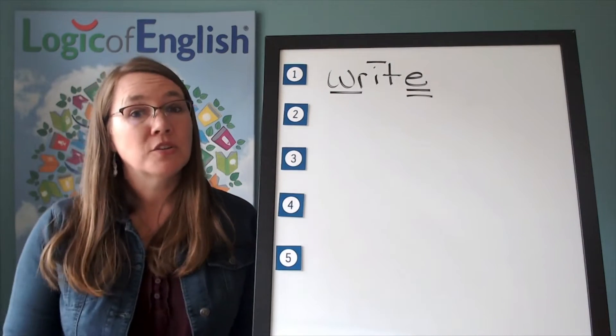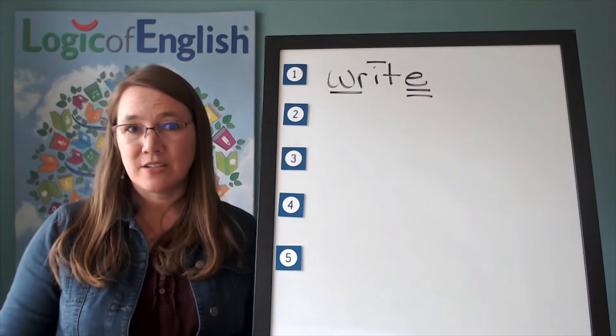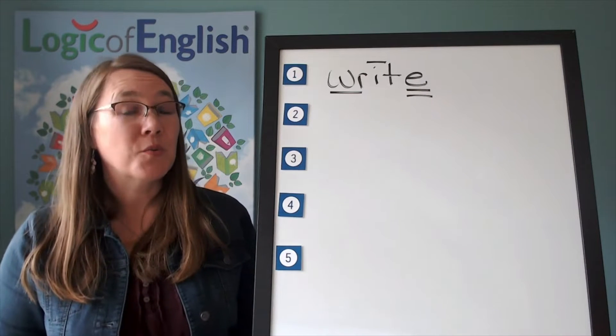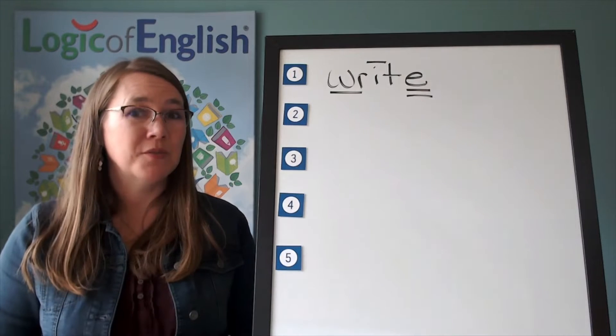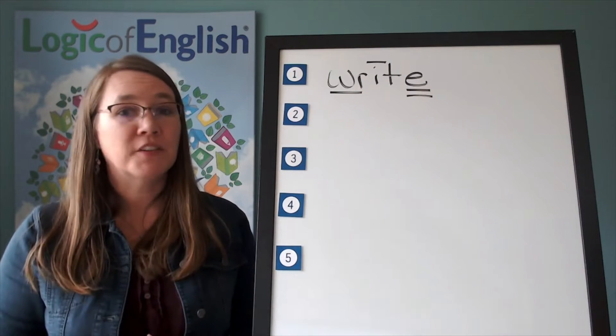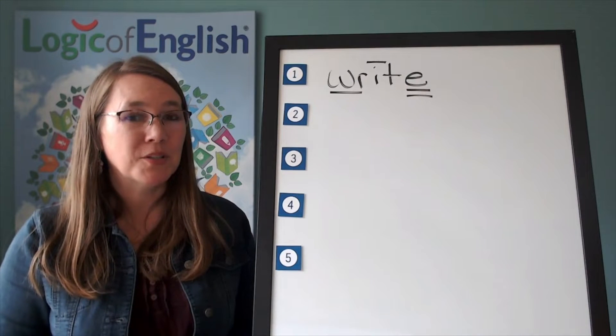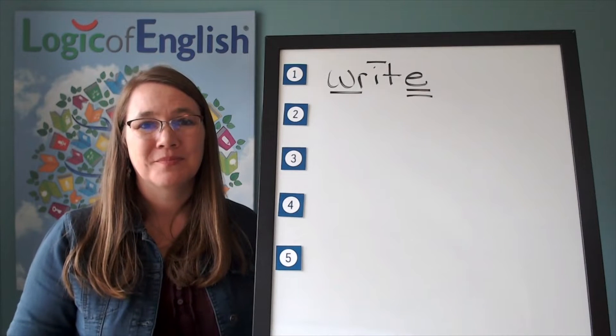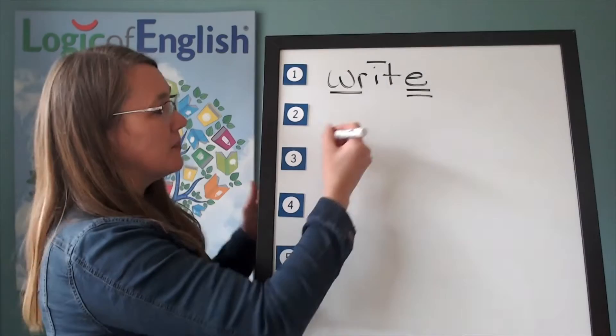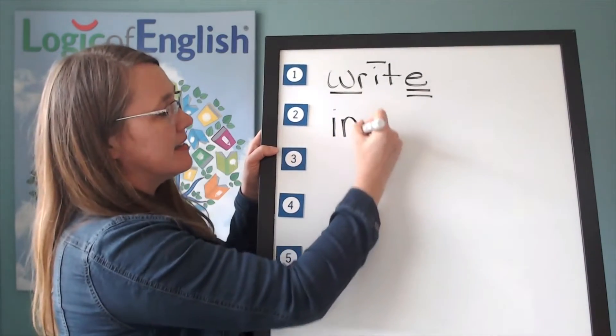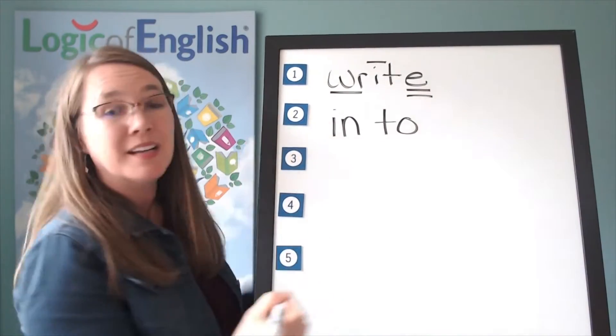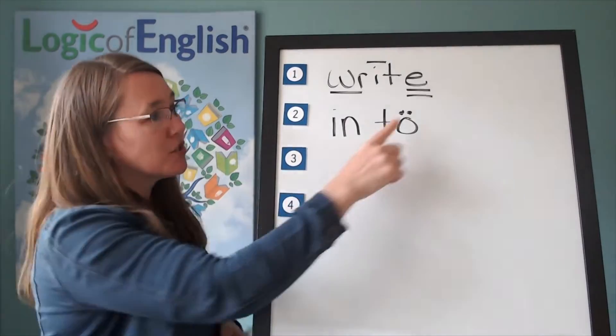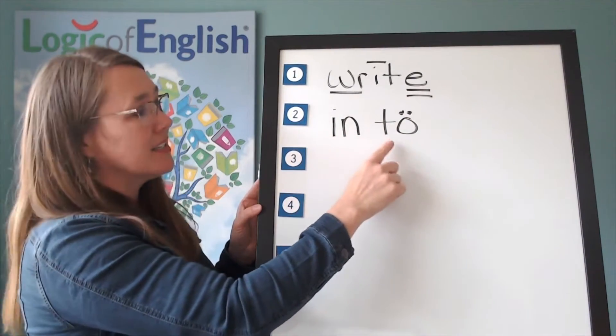The next word is into. She went into the house. Into. Go ahead and say into. Let's hum it to find out how many syllables. Two. So we will say to spell in, to. The first syllable is in. I, n. The second syllable is to. T, oo. How will we mark it? You're right. This is saying its broad sound. Ah, o, oo. So we'll put two dots over it. Let's sound it out. I, n, t, oo. Into.